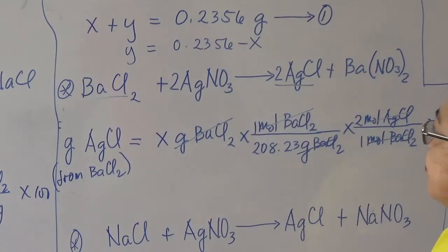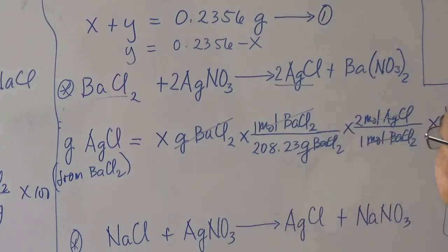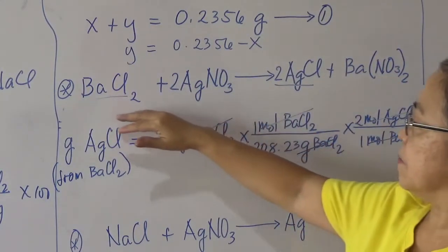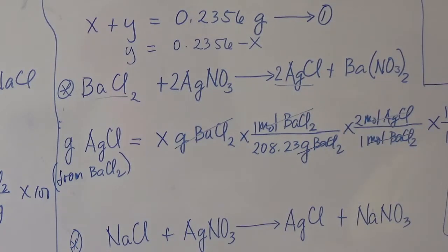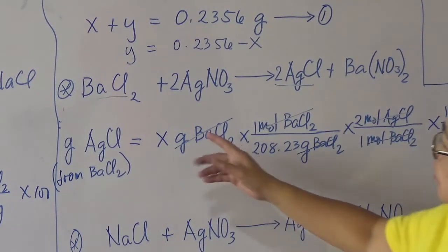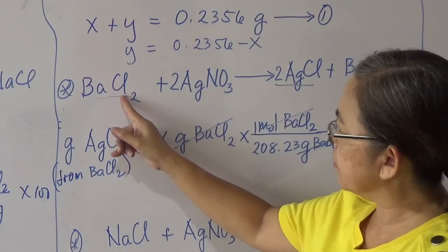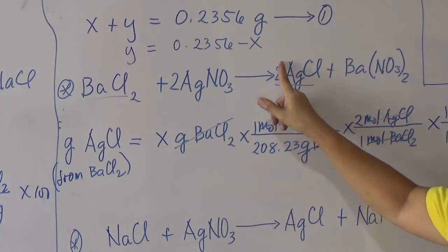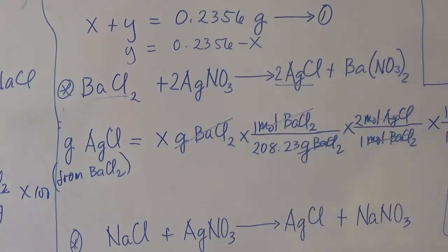Balance the equation. We have one mole of barium chloride producing two moles of the precipitate. Barium chloride has two atoms of chlorine; since the precipitate contains only one chlorine atom per formula unit, two moles of precipitate are needed to balance the equation.